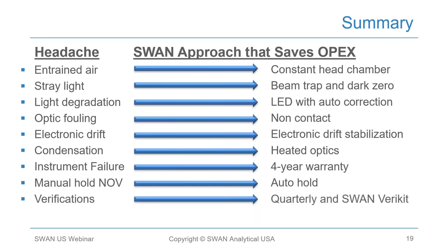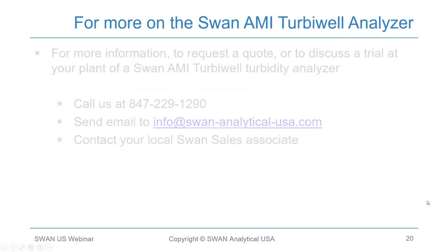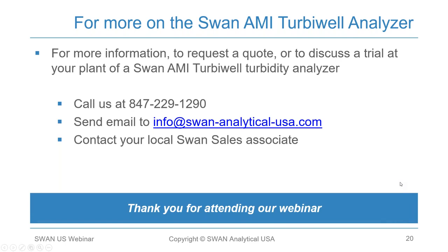Verifications only need to be performed quarterly using Swan's verification kit, which mounts flush in the body without special manipulation, significantly reducing operational cost over time. Calibrations are not recommended by Swan, thereby significantly reducing chemical and labor expenses — and possibly contractor costs. For more information about the Swan TurboWell analyzer, to request a quote, or to discuss a trial at your plant, call the number on the screen, send an email to our inbox, or contact your local Swan sales associate. Thank you for attending our webinar today.